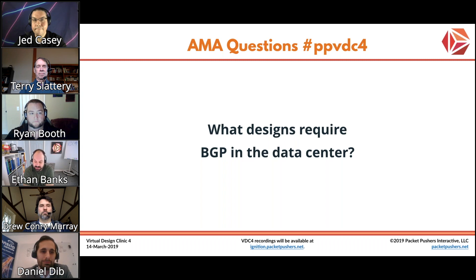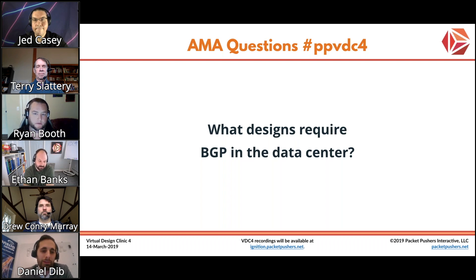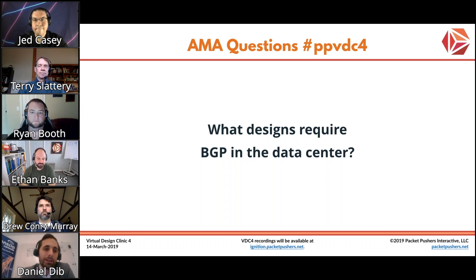The RFC that defines what looks like a model for BGP in the data center — should that be followed, or is it a little too specific and you really need to be of a certain size or looking for specific capabilities to follow that particular model? Yeah, I don't think you need to specifically follow that one if you have like 10 switches. If you only have 10 switches you could probably just run OSPF or IS-IS, unless you need to do policy segmentation, traffic engineering, or those kinds of things.